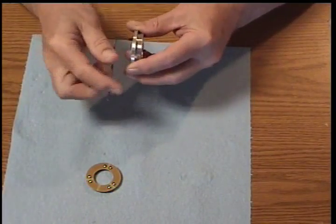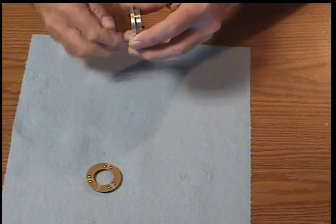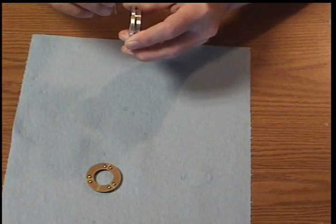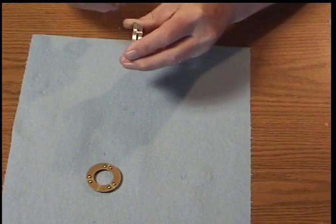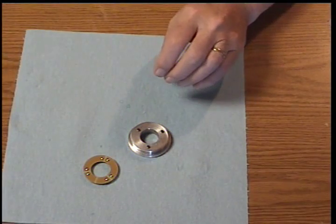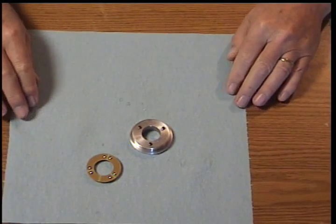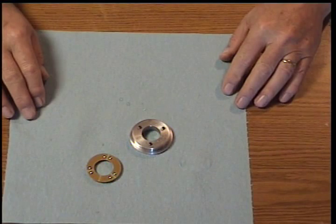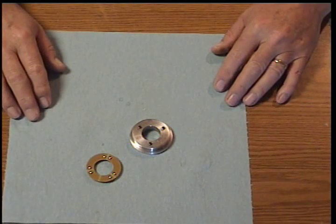One other comment that probably would have been better placed at the beginning: these parts have not been washed before they have been sent to you, so they may have machining oil on them. The aluminum parts especially should be washed in warm soapy water and rinsed thoroughly before you start the construction process.